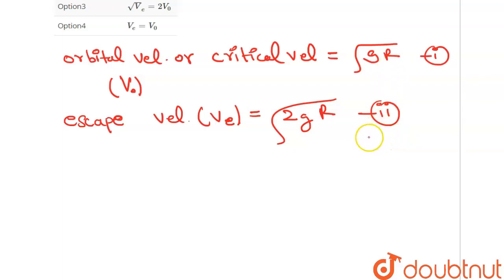Now let's divide equation 2 by equation 1. That will be VE over V0. This will be 2GR over GR. This will be equals to root 2. This means escape velocity equals root 2 times V0.